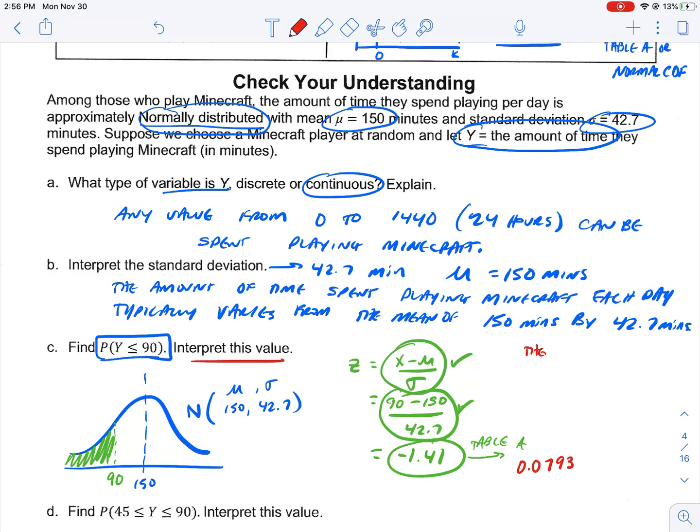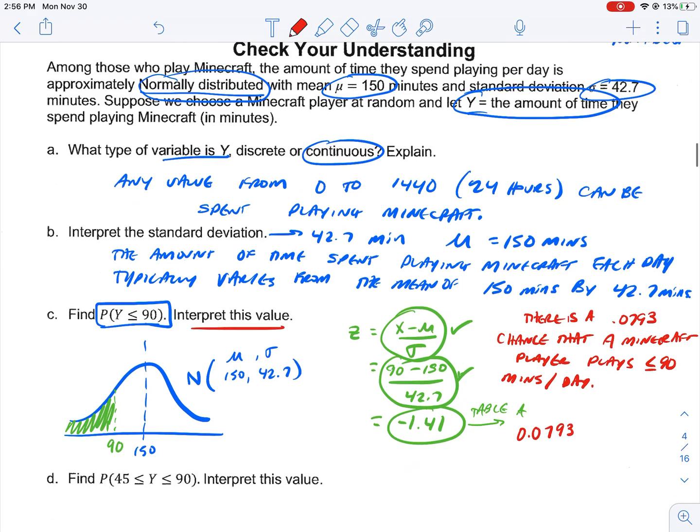what I'm going to say is there is a 0.0793 chance that a Minecraft player plays less than or equal to 90 minutes per day. There's a 7% chance that they play less than 90 minutes per day.